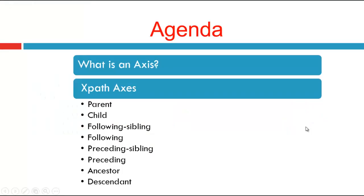Now let's see the agenda of this topic. What is an axis? XPath Axes. There are many XPath axes. The first one is parent, second one is child, next following sibling, following, preceding sibling, preceding, ancestor and descendant. Let's see one by one in detail.